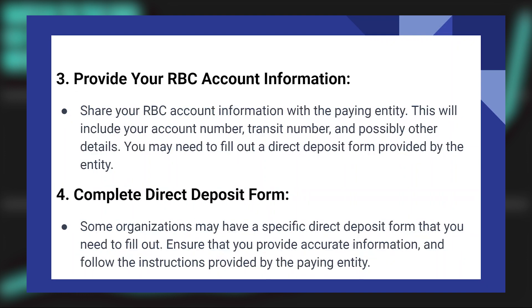Then share your RBC account information with the paying entity. This will include your account number, transit number, and possibly other details. You may need to fill out a direct deposit form provided by the entity, as some organizations have a specific form you need to complete. Ensure that you provide accurate information and follow the instructions provided by the paying entity.